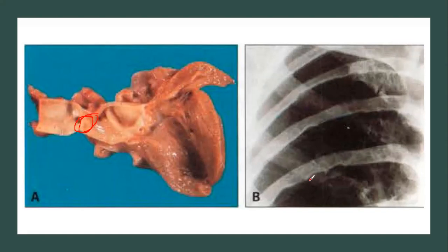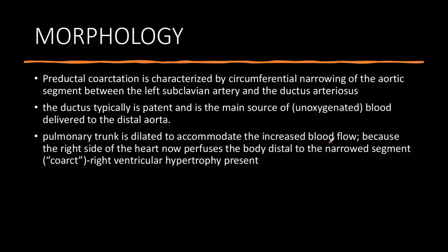Here you can see this X-ray. The lower surfaces of these ribs look like they have been beaten off — that is what is known as notching. It is due to the formation of collateral channels which erode the lower borders of the ribs, and this is pathognomonic of aortic coarctation.